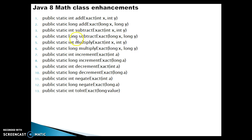The first method is called addExact, and you pass two integer parameters. This will add those two parameters and return an integer value. If the addition of these two integers goes out of the integer range, then this is going to throw an ArithmeticException.